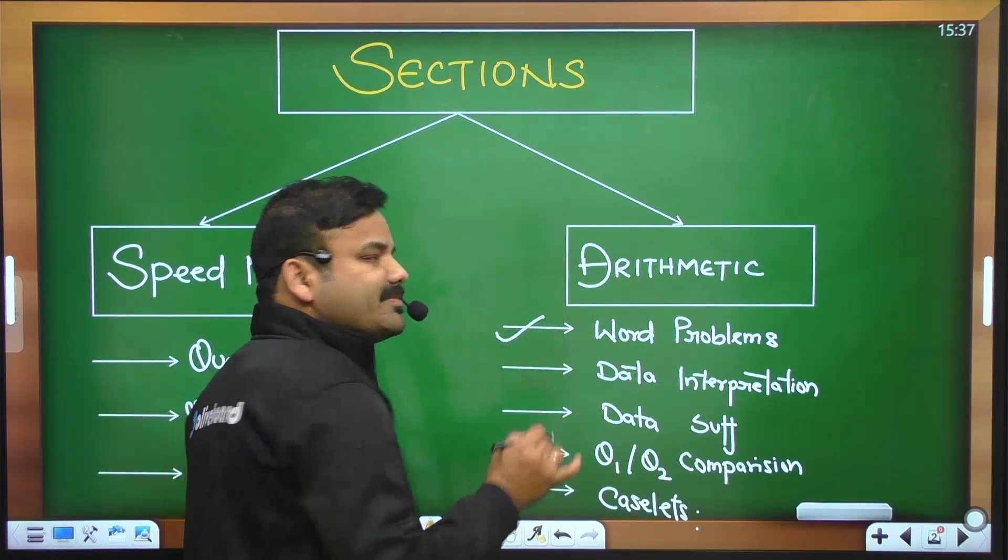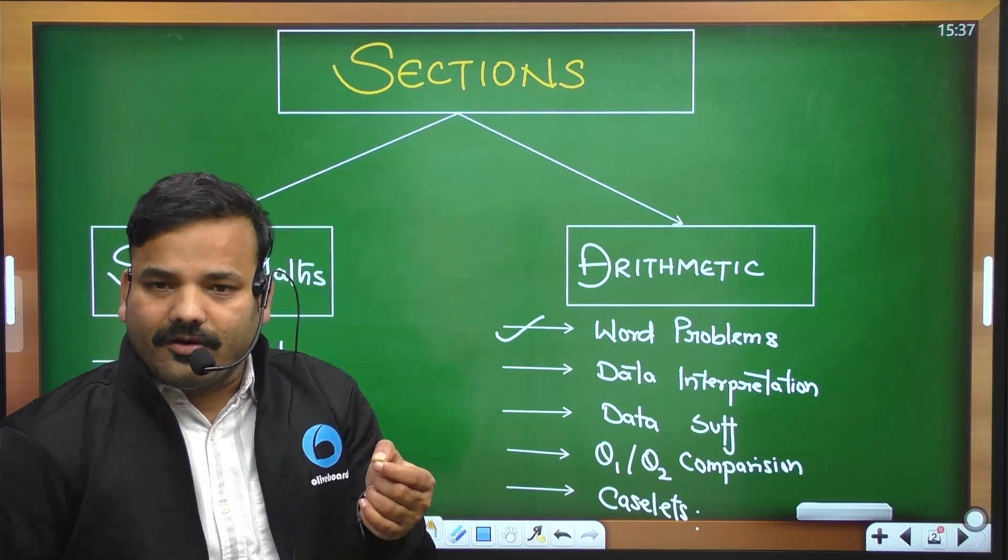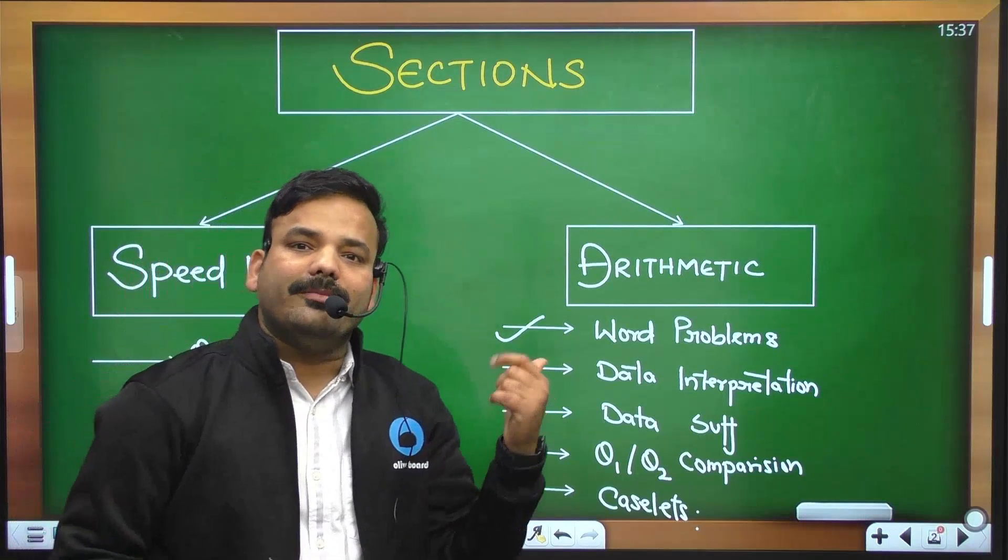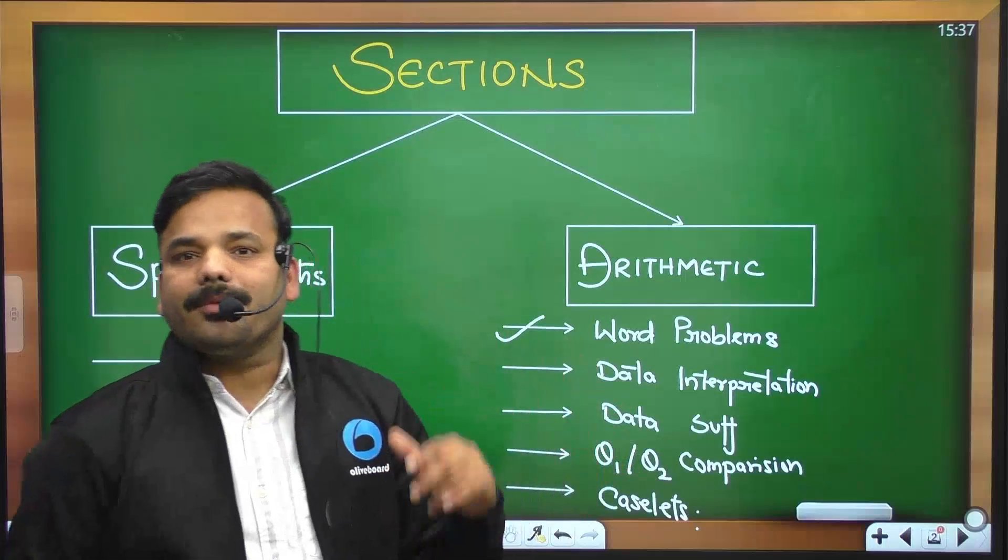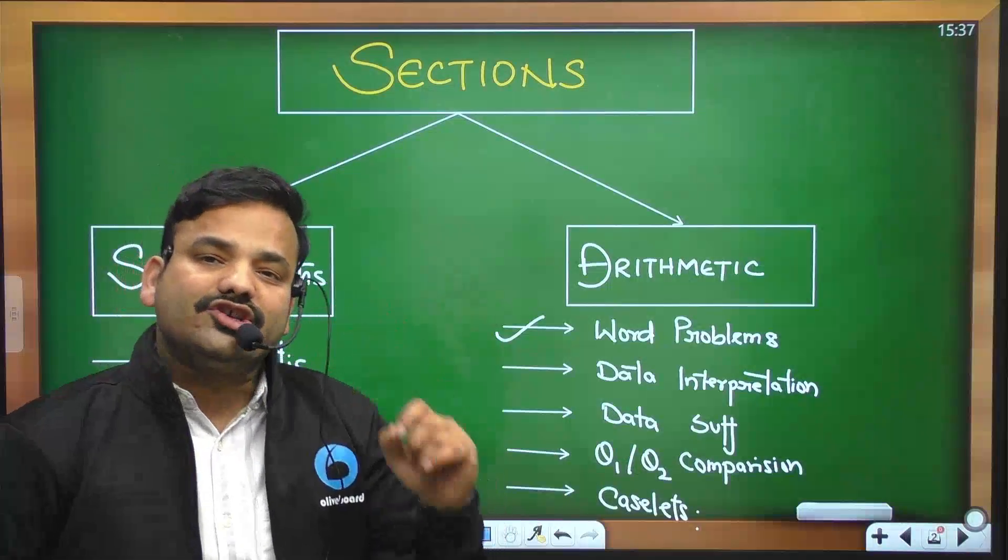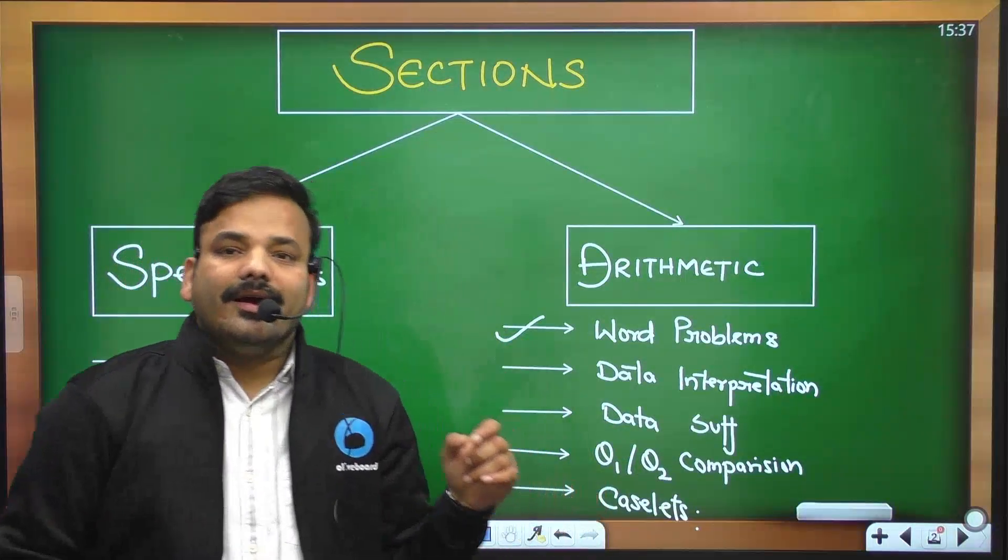Arithmetic ke part section ek toh ho aapke word problems hain, jismein aapko variable word problem ke form mein bhi questions poochhe hain, jis se probability ho gaya, mensuration ho gaya, time and work ho gaya, time speed distance ho gaya, boat stream ho gaya, partnership ho gaya, ages ho gaya, ratio ho gaya, mixture and alligation ho gaya.